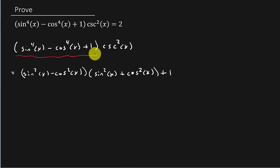So you can see, hopefully you remember this, that this part right here is 1. Sine squared plus cosine squared is 1.